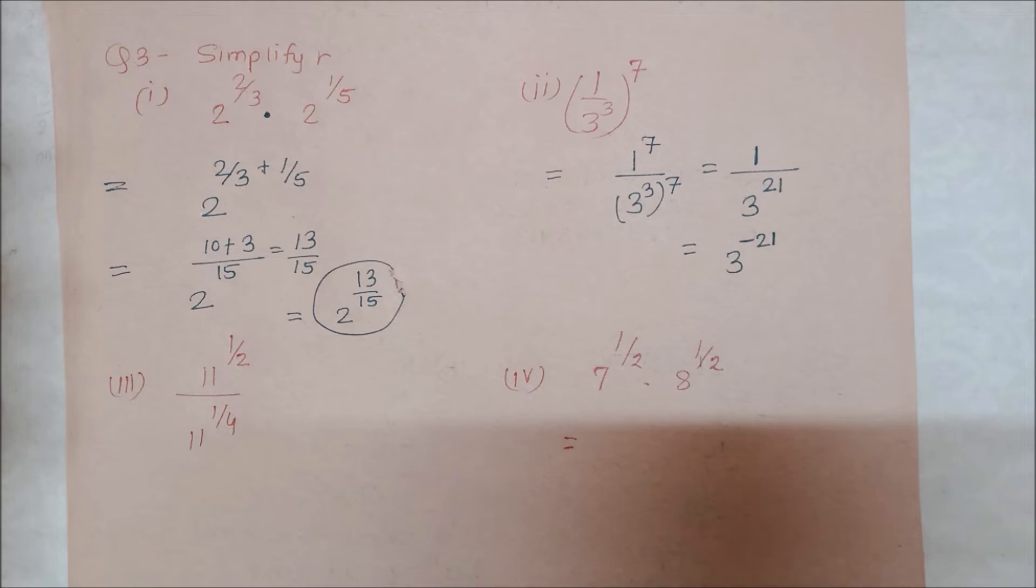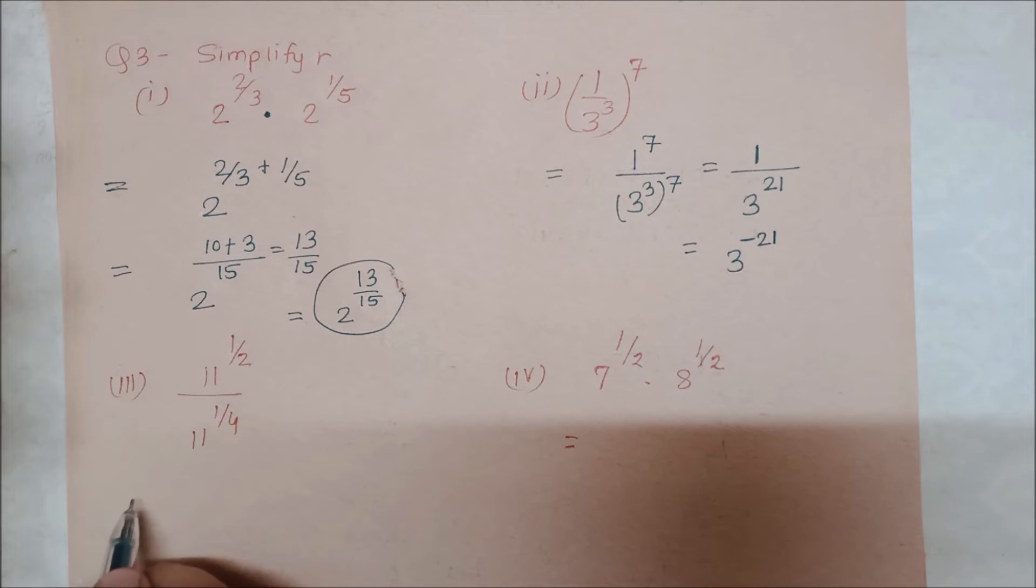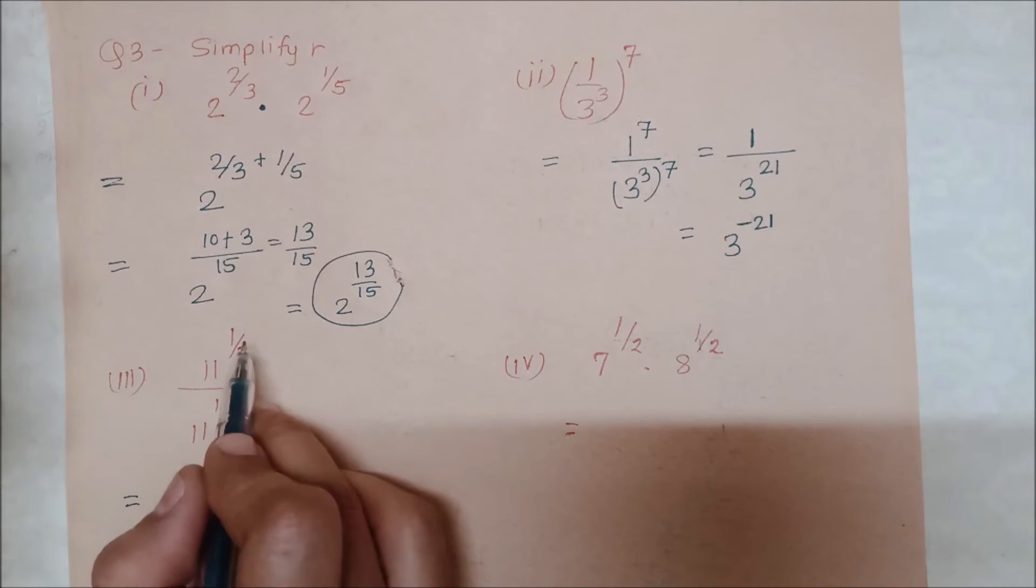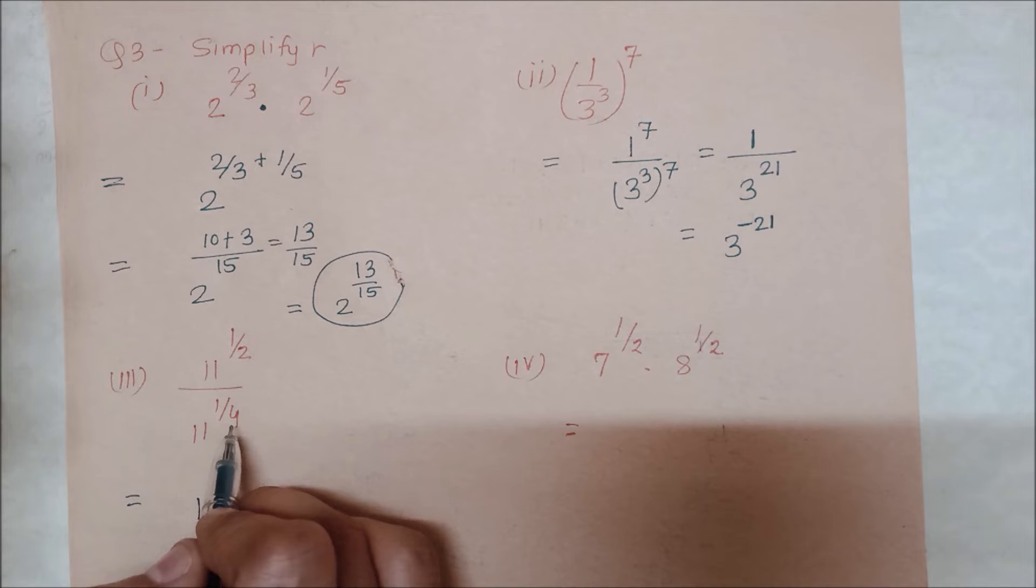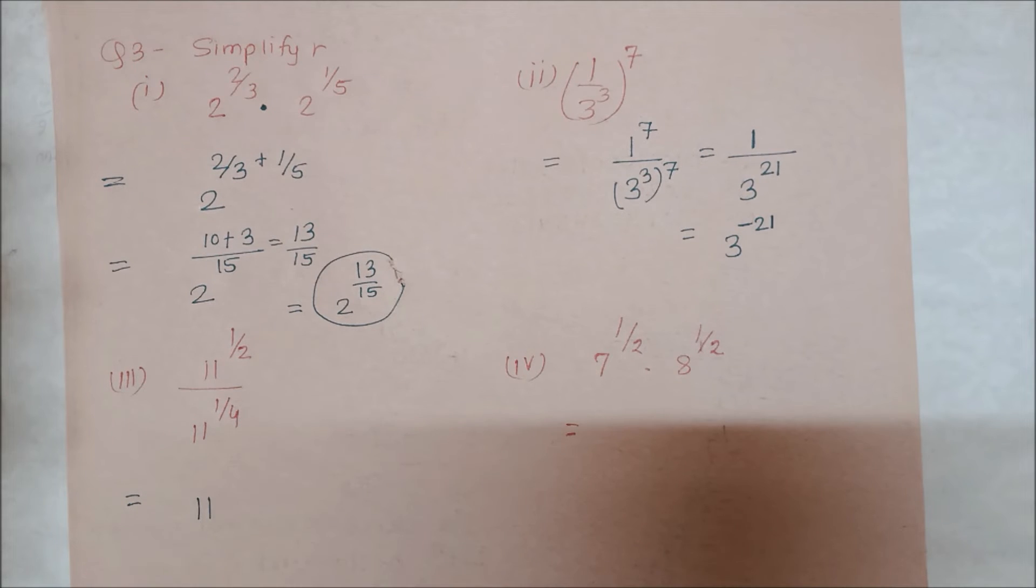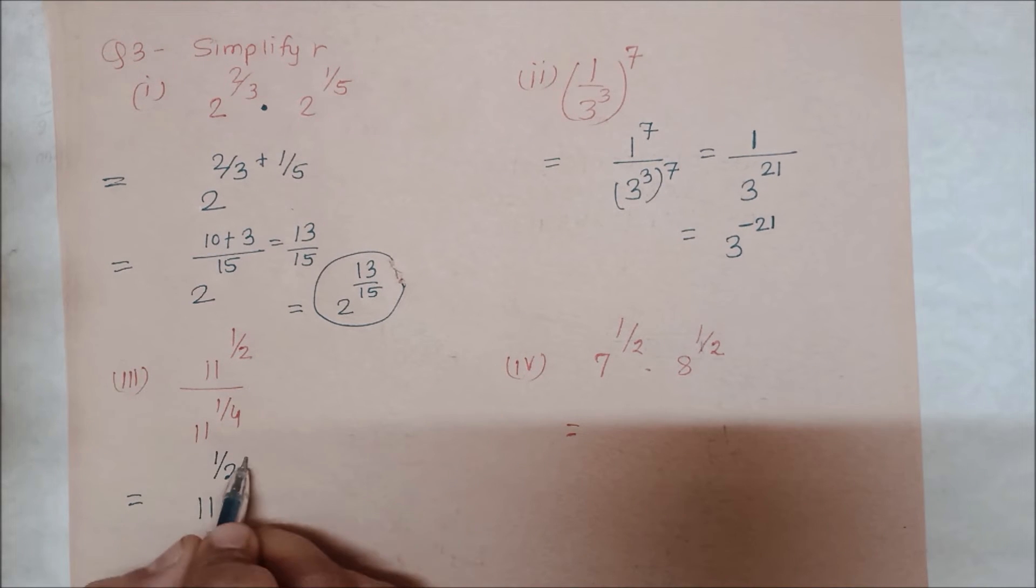Next, we'll see 11 to the power 1/2 upon 11 to the power 1/4. Here our base for both is the same, so 11 will come, but their powers which are in division - when 1/4 goes up, it will become minus, it will be subtracted.